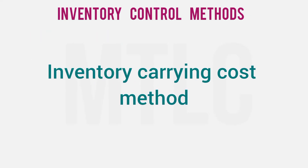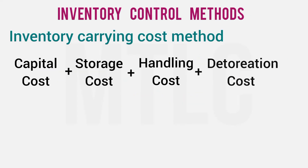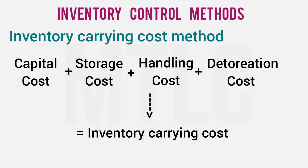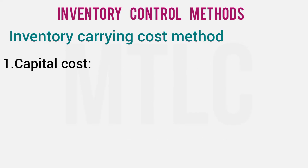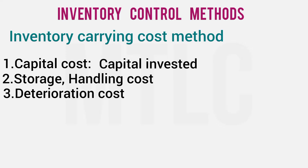Inventory Carrying Cost method includes: capital cost, storage cost, handling charges, and deterioration cost. Capital cost is the money invested in inventory. Storage cost and handling cost are the second component. Deterioration cost refers to expired or damaged goods requiring repair or warranty. When we invest an amount or quantity, we calculate the inventory carrying cost.